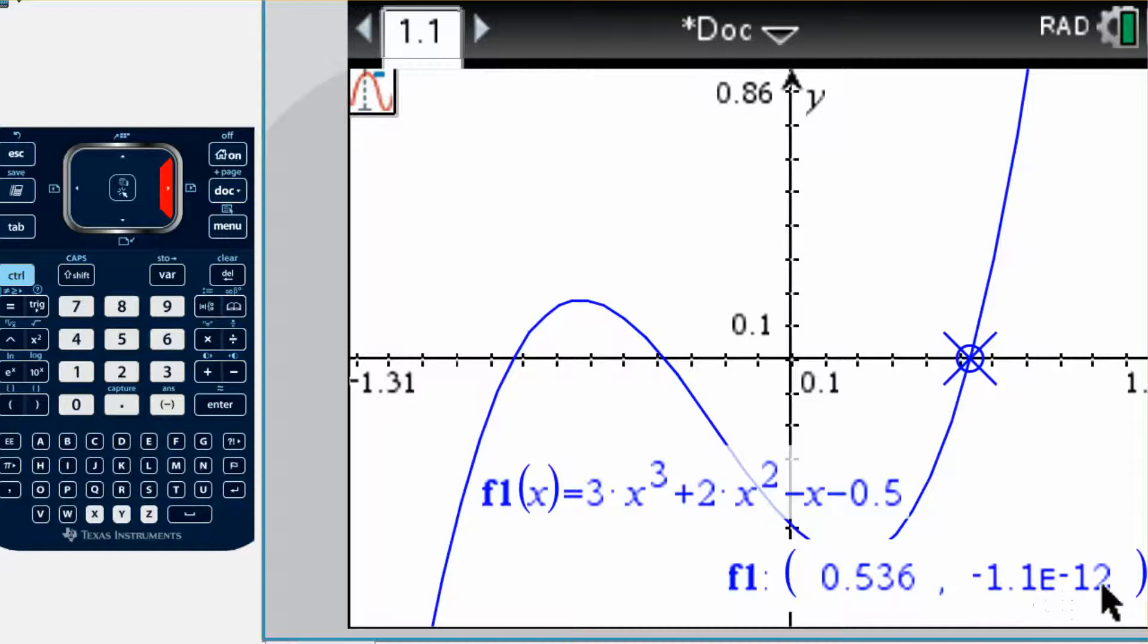So for all intents and purposes, that is zero. If you see e to some big number like 12, it's pretty much saying zero. Our x-value here though would be positive 0.536.